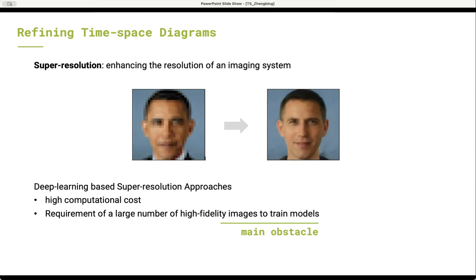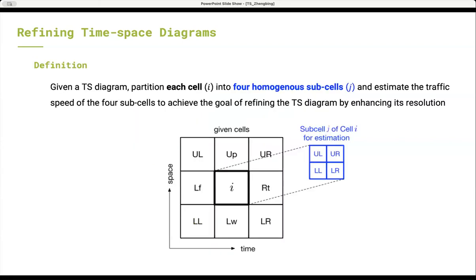For the time-space diagram refinement problem, the second drawback matters. That is, it is difficult to collect a large number of high fidelity large time-space scale traffic data, which costs a lot.